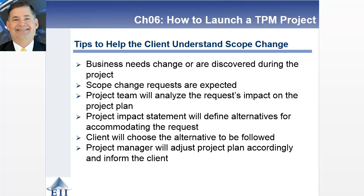Remember: projects are finite — they have a start date and an end date — and the only way you can honor that is to manage scope effectively. Different project management lifecycle models have different tolerances for handling scope change, so you want to pick a lifecycle model associated with the expected amount of scope change. You also want to have mechanisms for dealing with scope change so that it doesn't become a crisis — this is just something that professionals do because they anticipated these changes.